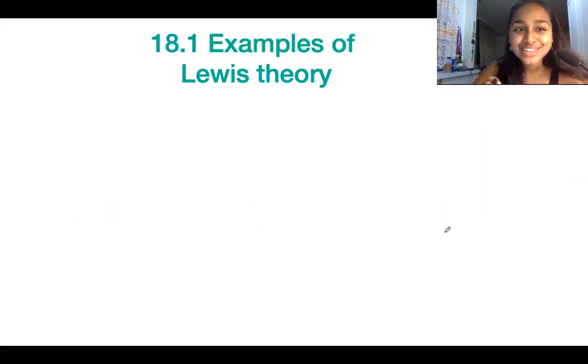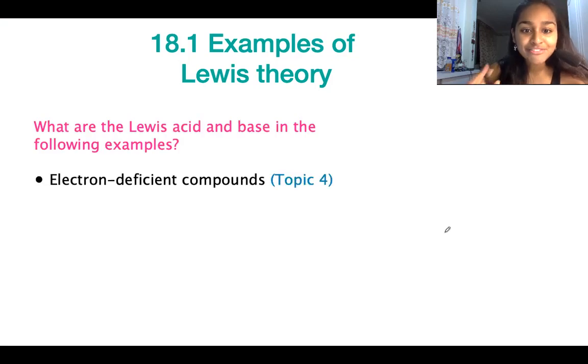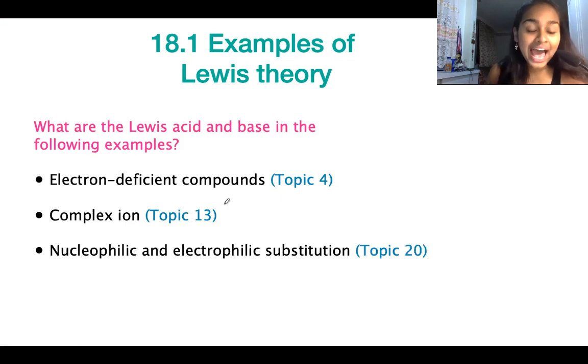So there are three main examples of Lewis acid and base theory that you need to be aware of for your exams. So the first one is electron deficient compounds. So this is from bonding. The second one is complex ions from higher level periodicity. And last but not least, nucleophilic and electrophilic substitution, which is from higher level organic chemistry. So we're going to look at each of these in turn.